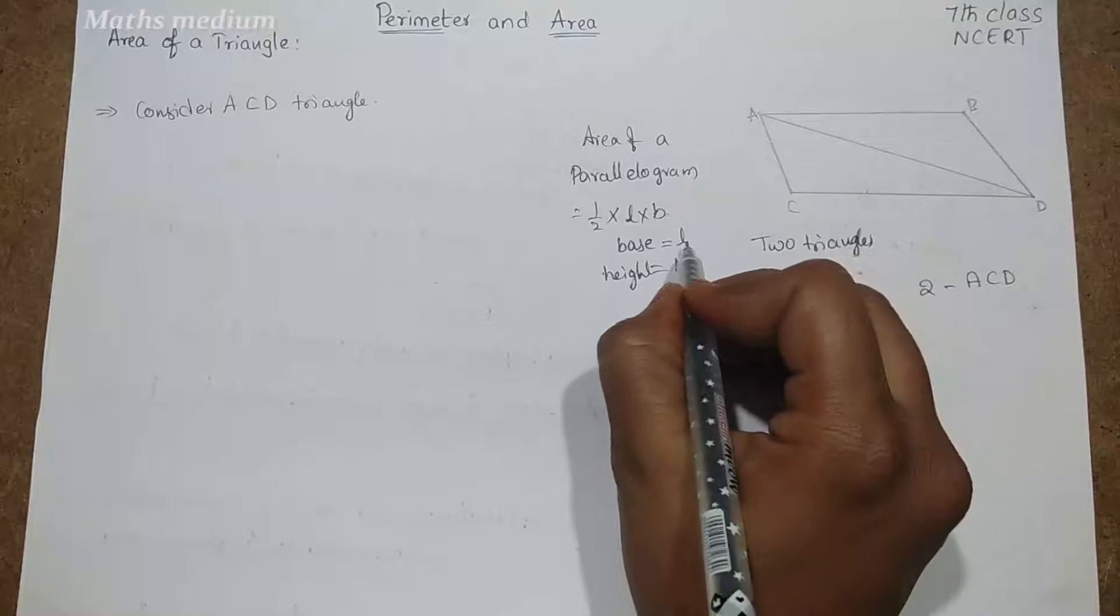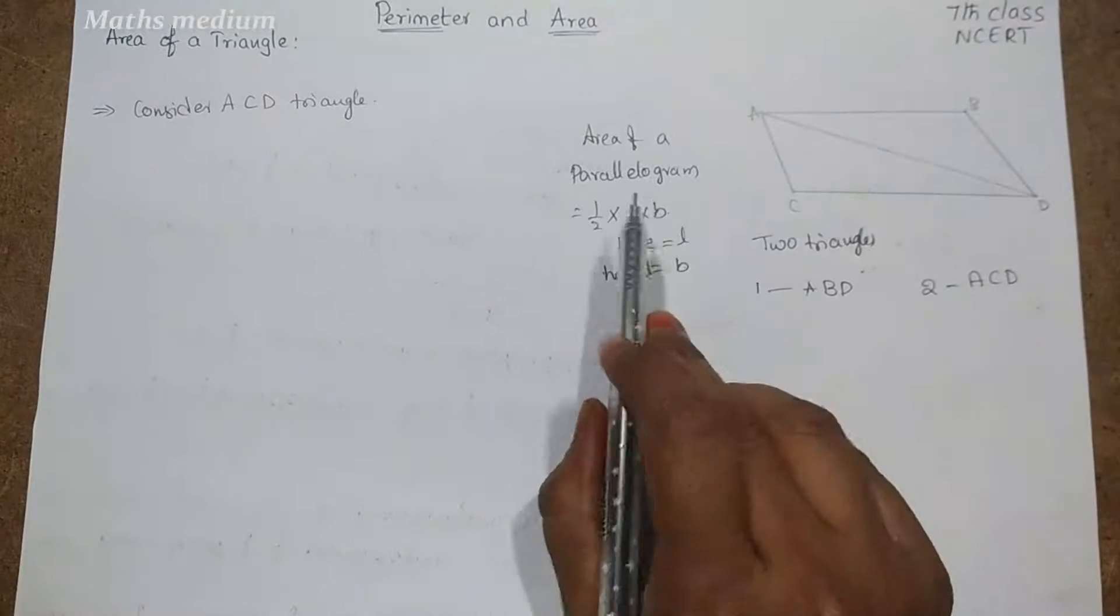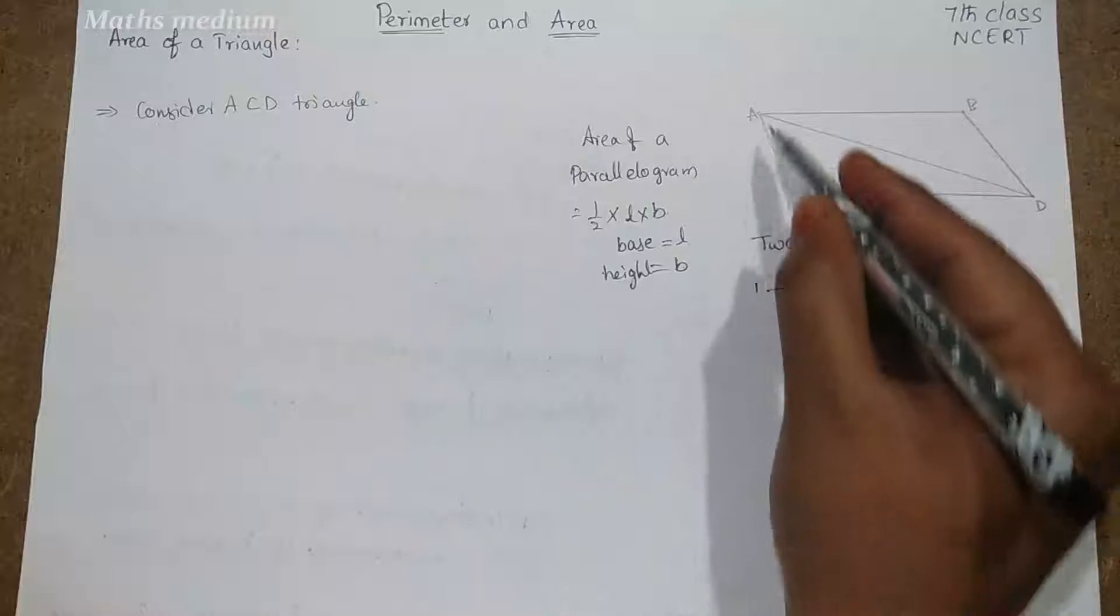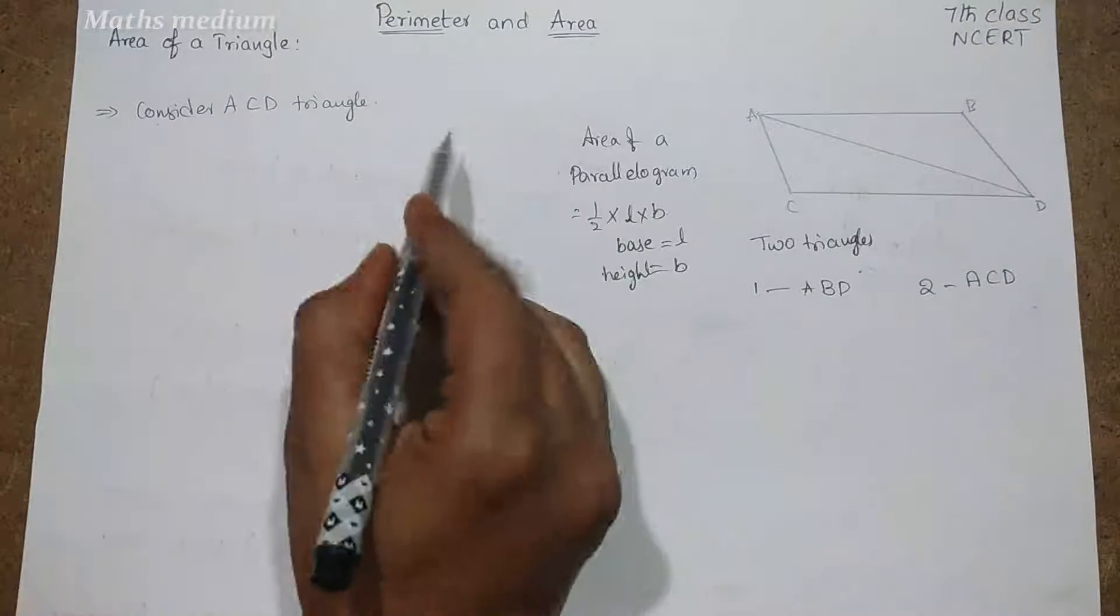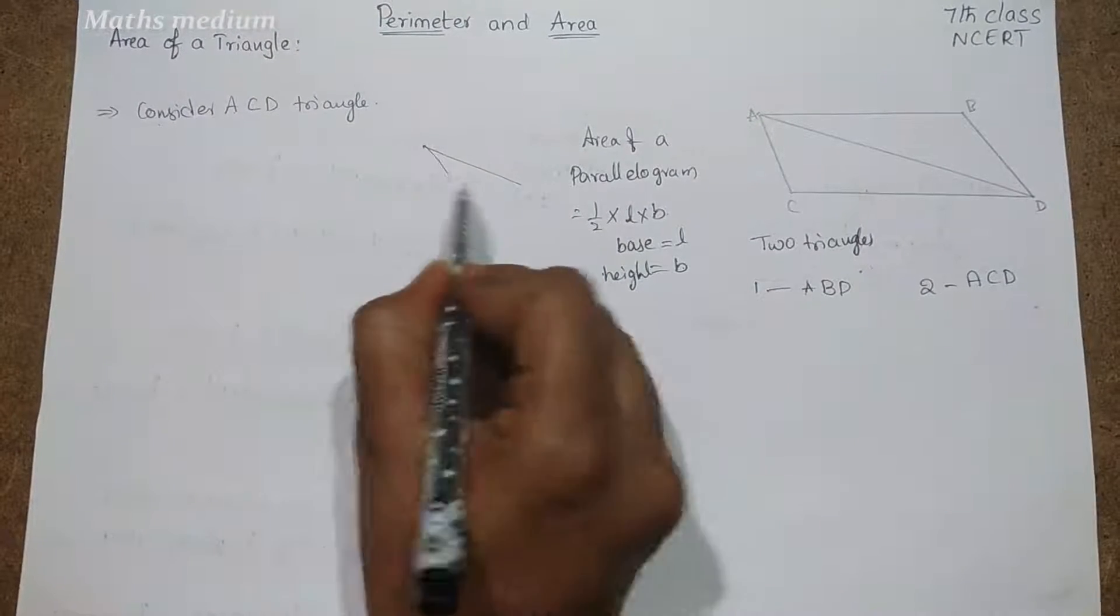What is base here? That is length, and height is B. We called it in that parallelogram theorem, but here in this case ACD triangle. So it means the triangle is like this.